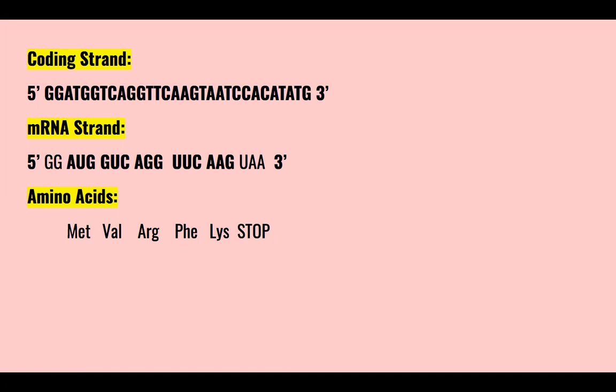In order to find our amino acids, we look for a start codon in the mRNA strand. The start codon is always AUG, and we end with a stop codon, which in this case is UAA. The five amino acids in this sequence are methionine, valine, arginine, phenylalanine, and lysine. The stop codon is not an amino acid.